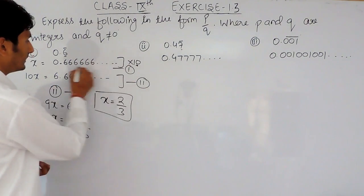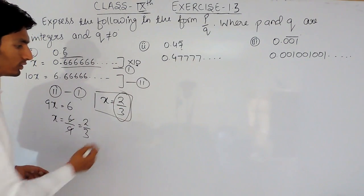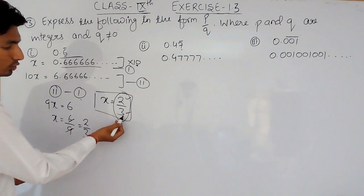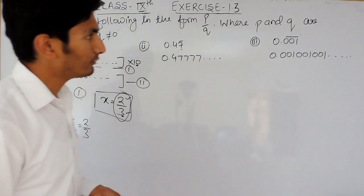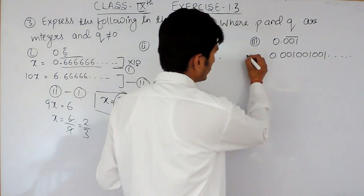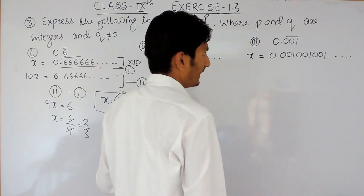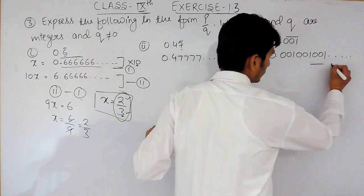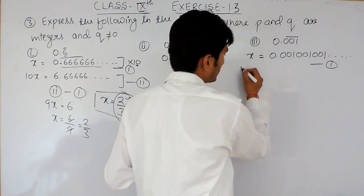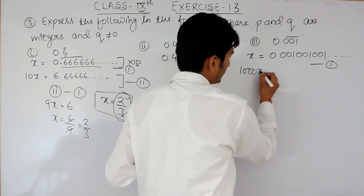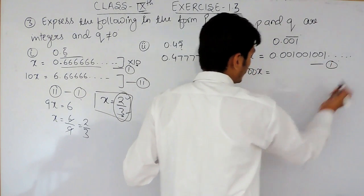We have converted the expression into the form p upon q where p and q are integers and q is not equal to 0. Similarly, for 0.001 bar, we consider this as x — our first equation. There are 3 digits repeating, so we multiply this equation by 1000.